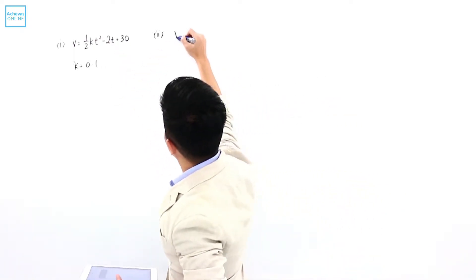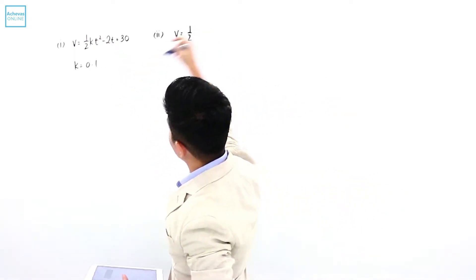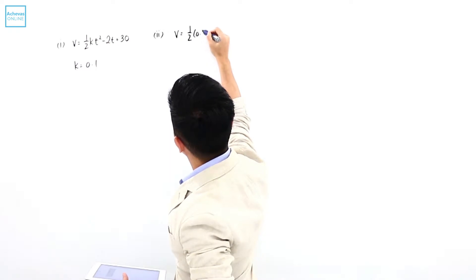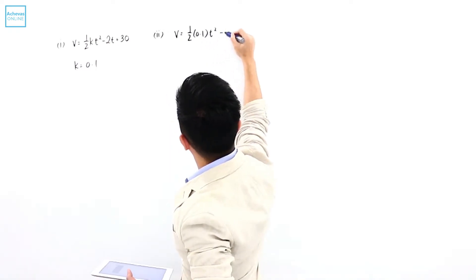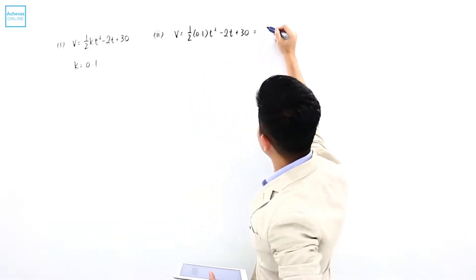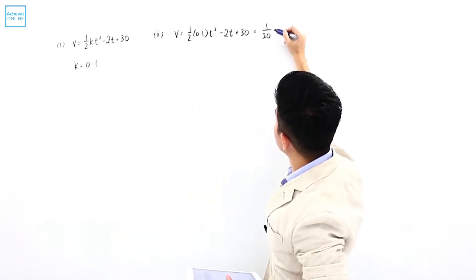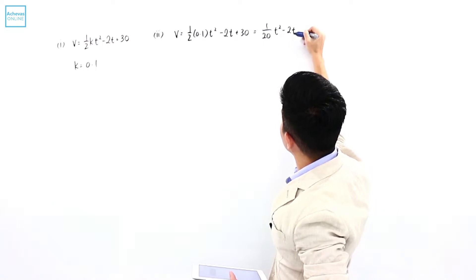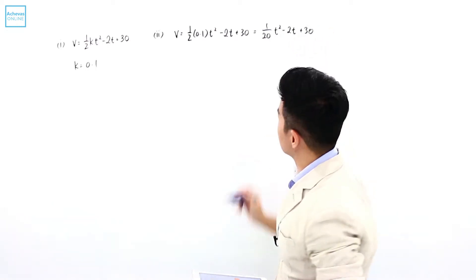From part 1, we know the velocity is going to be equal to 1 over 2k, 0.1 t squared minus 2t plus 30, which means that the velocity is 1 over 20 t squared minus 2t plus 30.